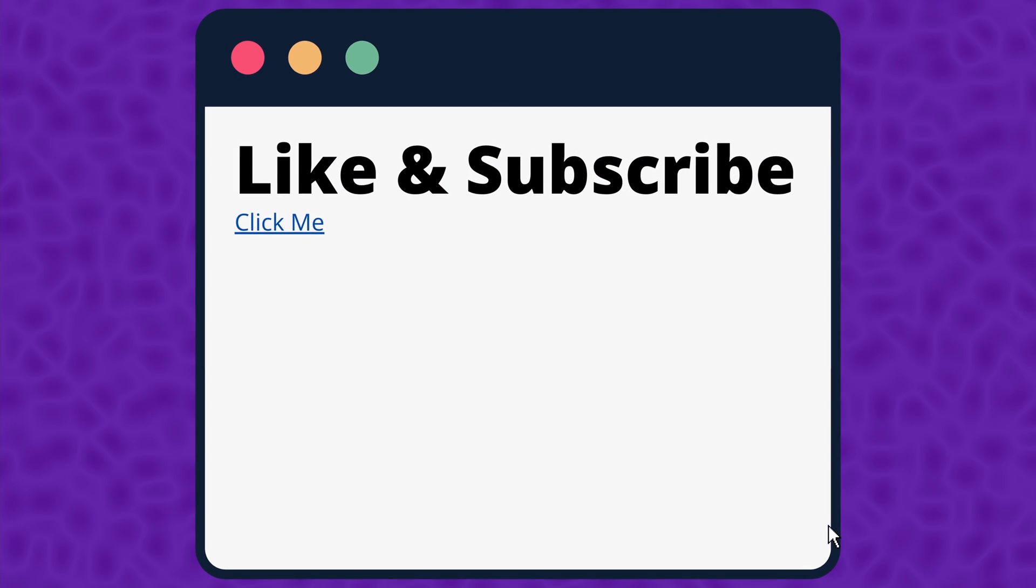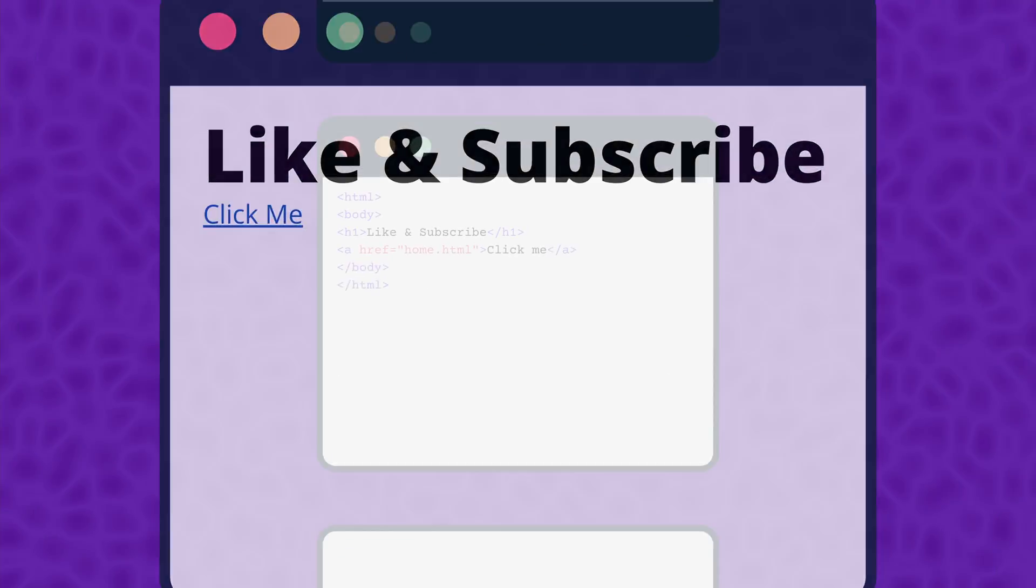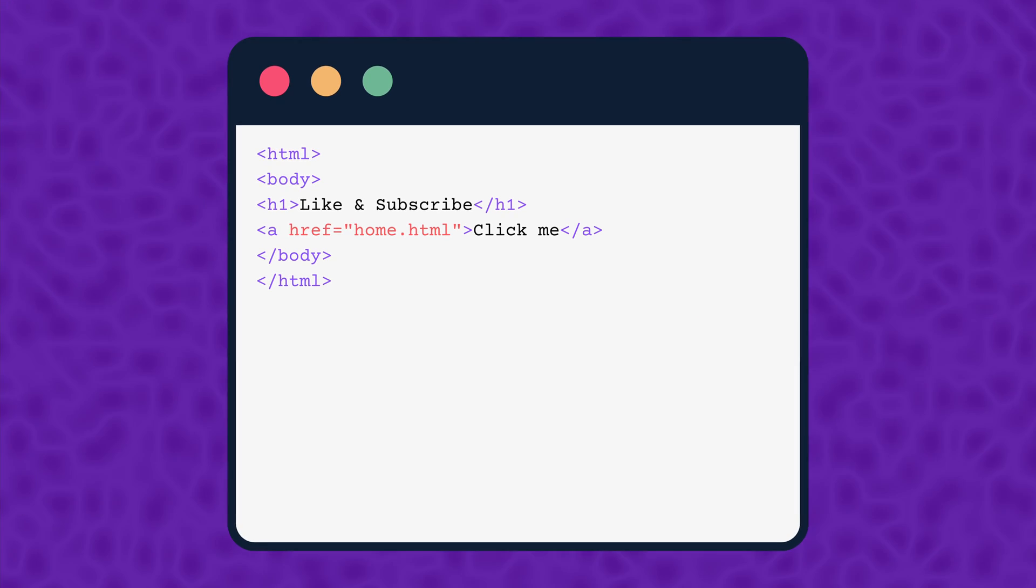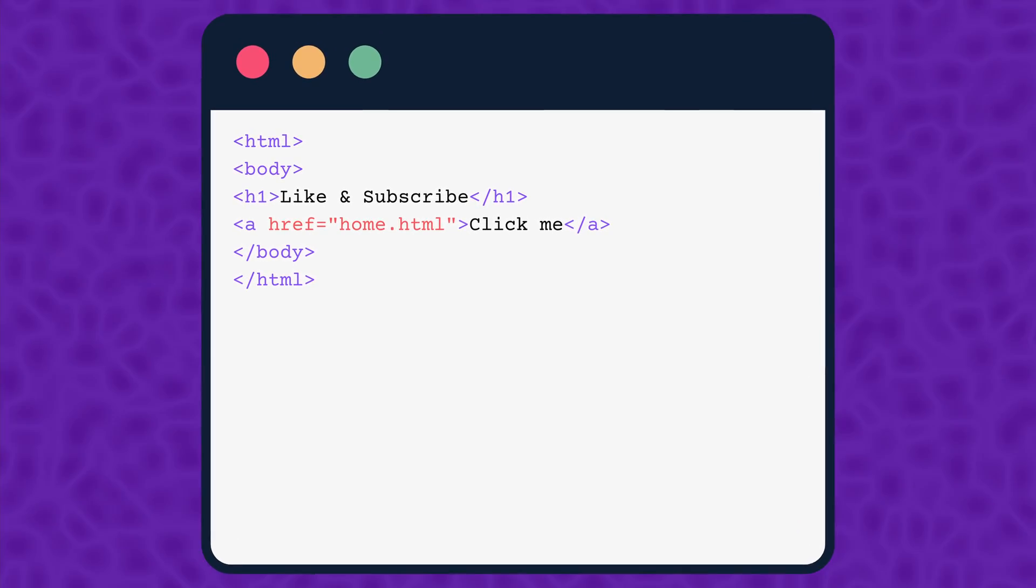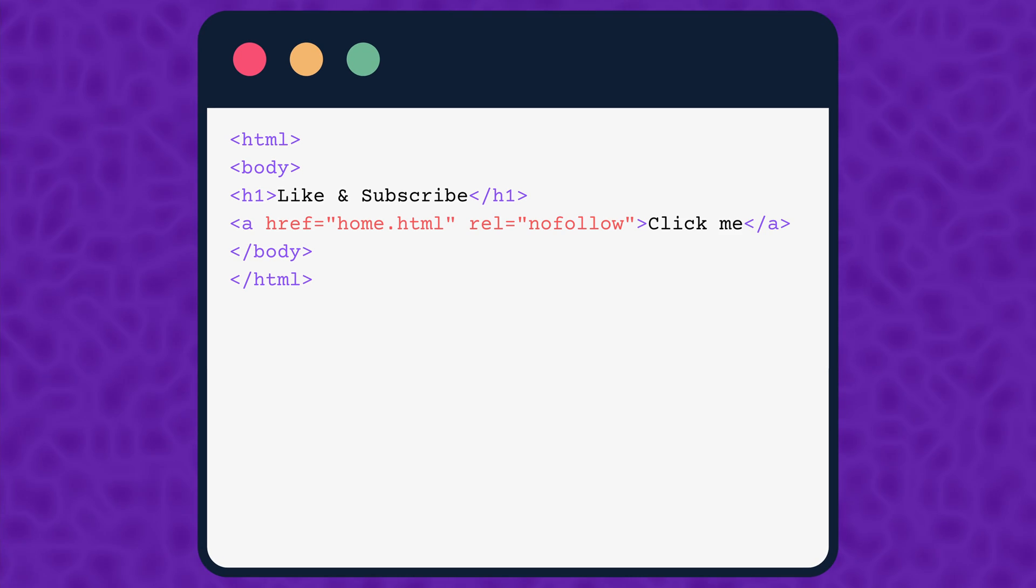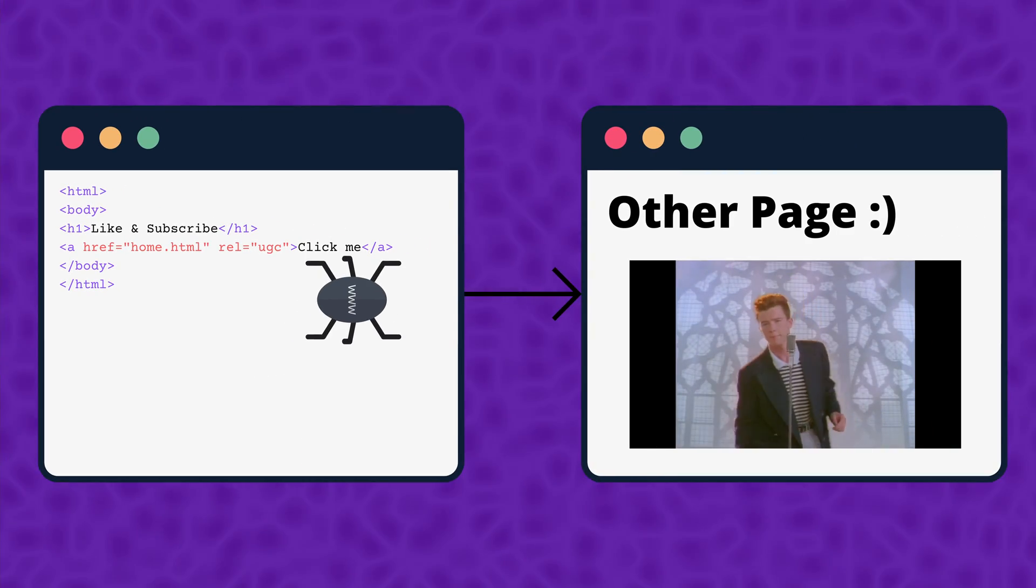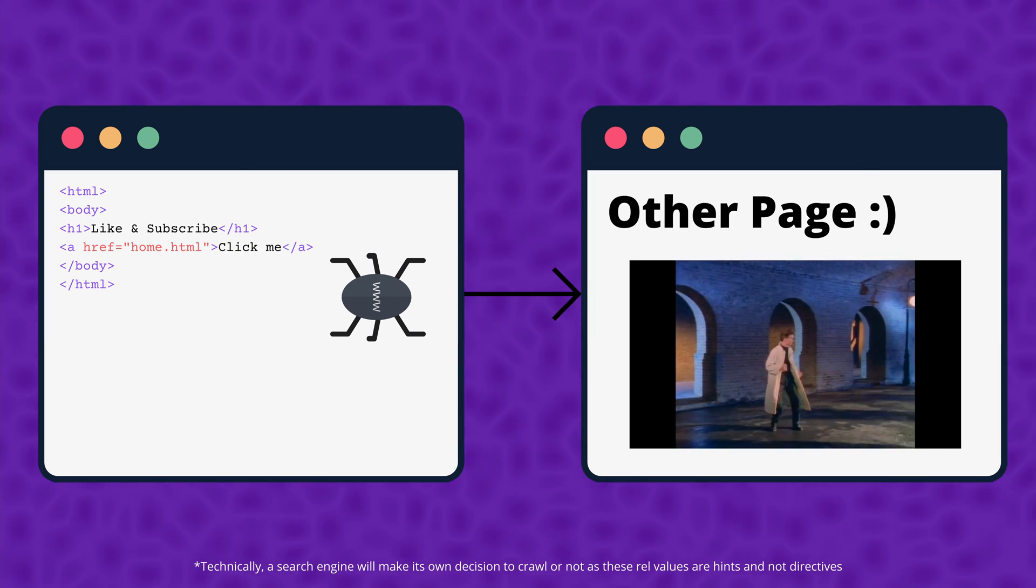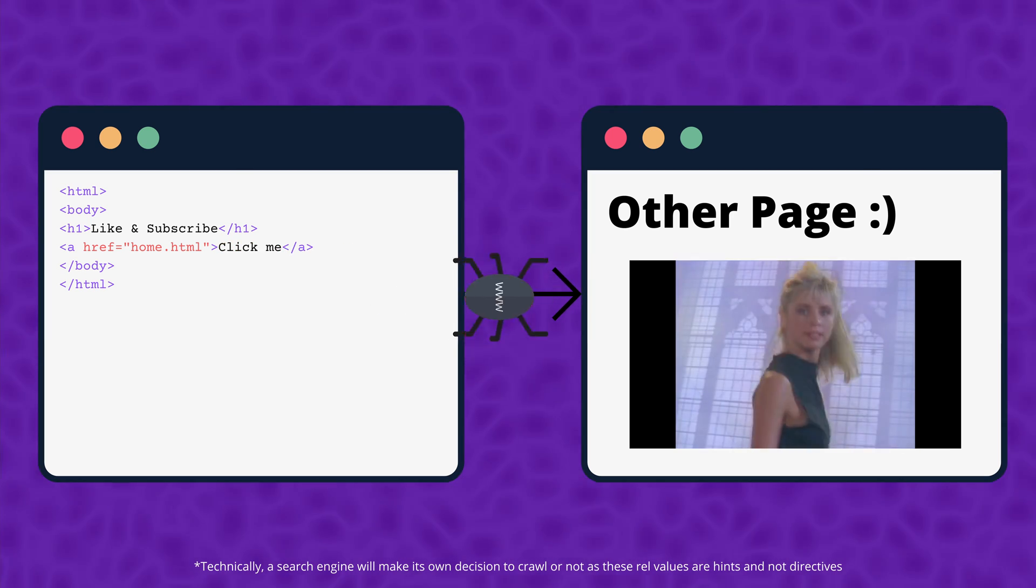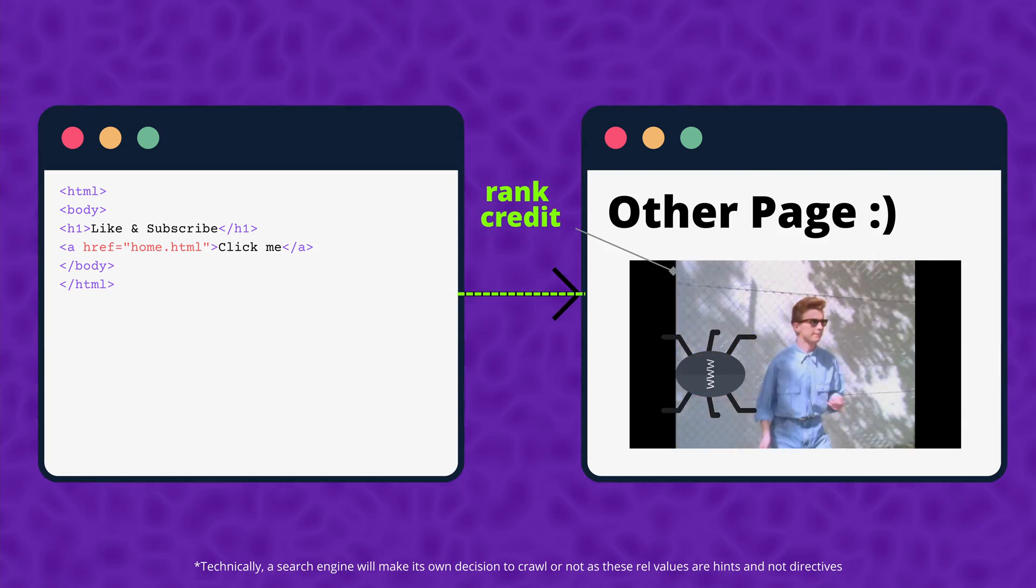While we as visitors to a webpage only see a blue hyperlink, a search engine will actually look at the attributes of the link. In the most simple terms, a search engine will check to see if an external link has a rel attribute with a nofollow, sponsored, or UGC value. If a link has one of those values, then the search engine will not crawl the other page. On the other hand, if a link does not have any of those values, then the search engine will crawl the other page and pass along ranking credit to the other page.